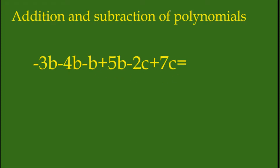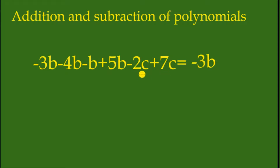They have opposite signs so this is negative 3b. Next we have negative 2c plus positive 7c. Negative 2c and positive 7c — they have opposite signs so this is subtraction.